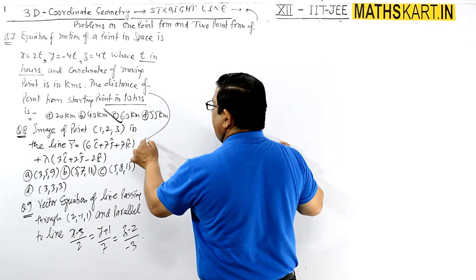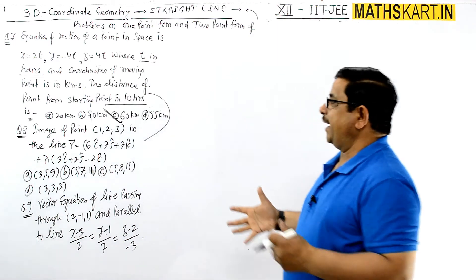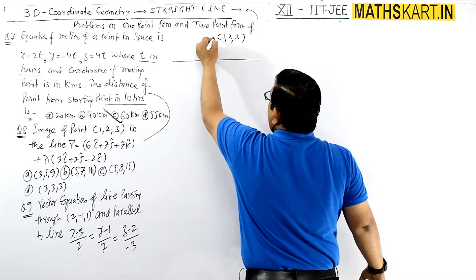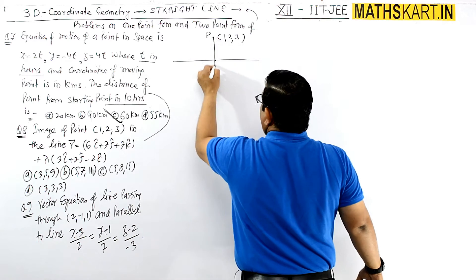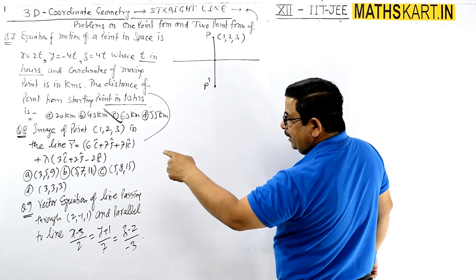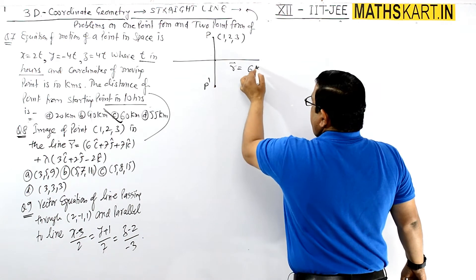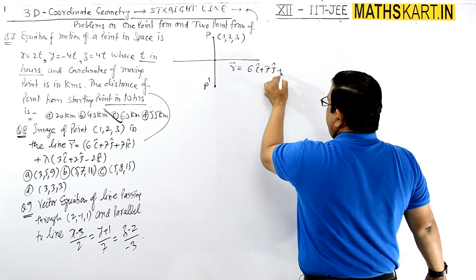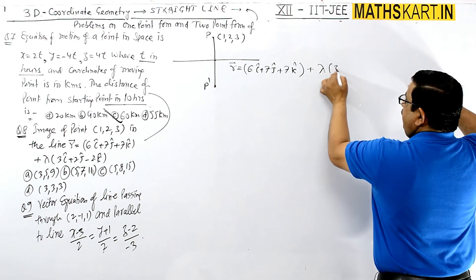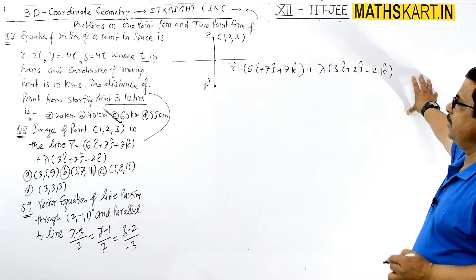Question 8: the image of a point in a line — the line is acting like a mirror. The point is (1, 2, 3) and the image P' is required. The line is given as r equals 6i + 7j + 7k plus λ times (3i + 2j − 2k).